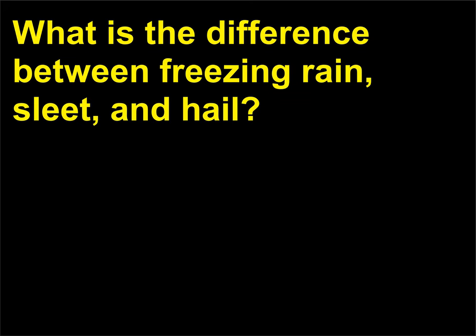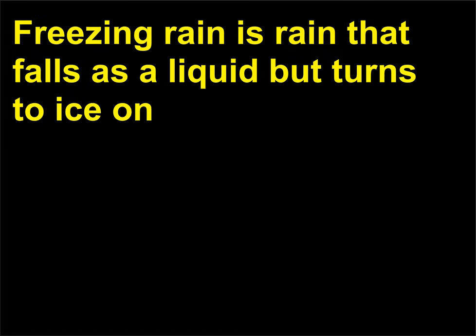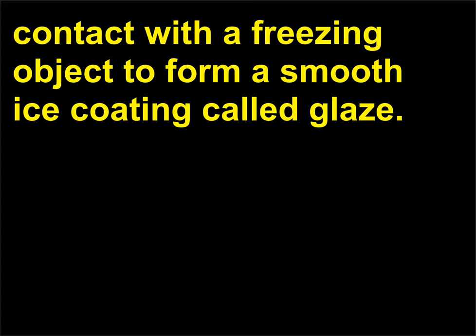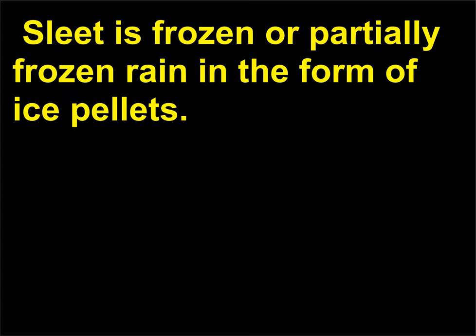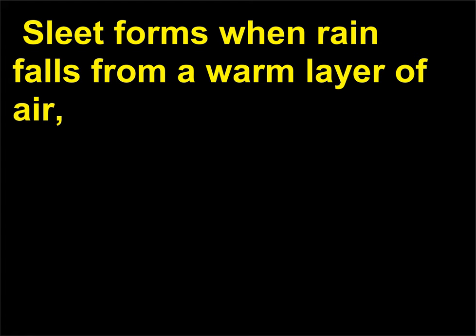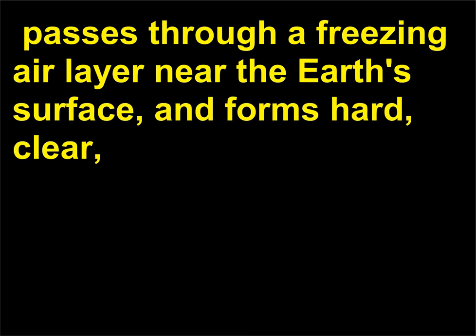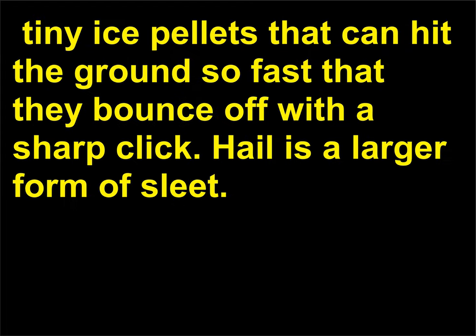What is the difference between freezing rain, sleet, and hail? Freezing rain is rain that falls as a liquid but turns to ice on contact with a freezing object to form a smooth ice coating called glaze. Usually freezing rain only lasts a short time, because it either turns to rain or to snow. Sleet is frozen or partially frozen rain in the form of ice pellets, formed when rain falls from a warm layer of air and passes through a freezing air layer near the earth's surface, forming hard, clear ice pellets that bounce off the ground with a sharp click. Hail is a larger form of sleet.